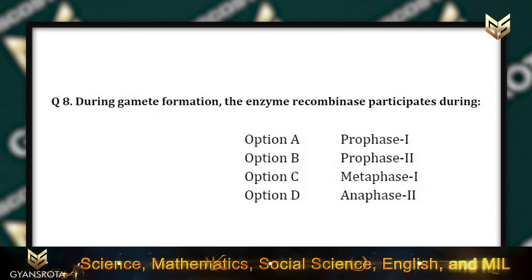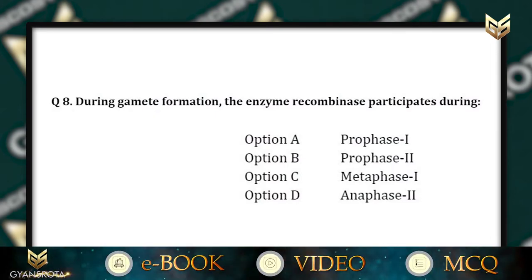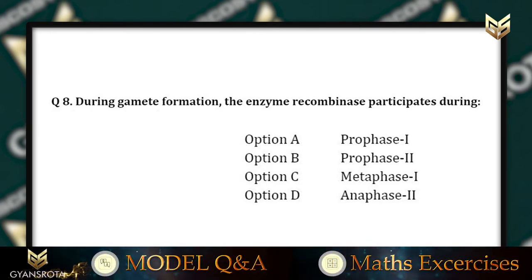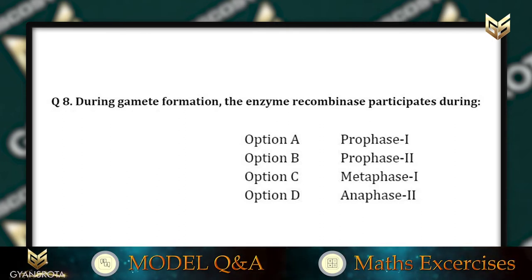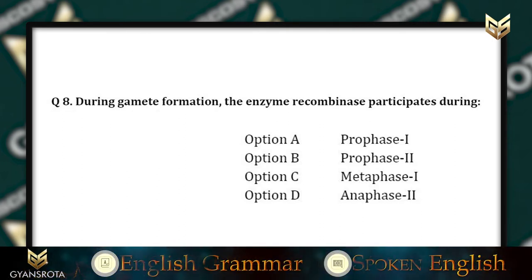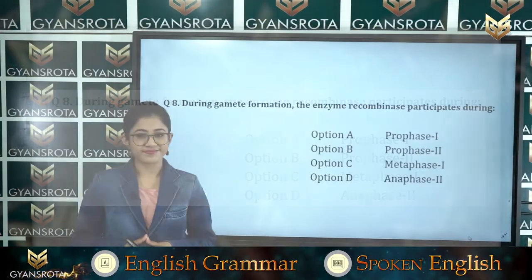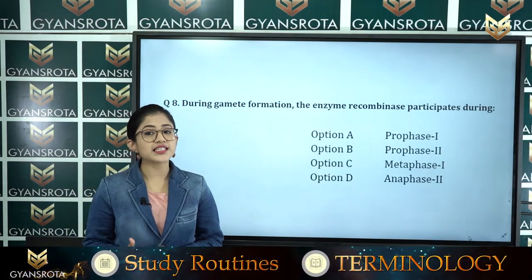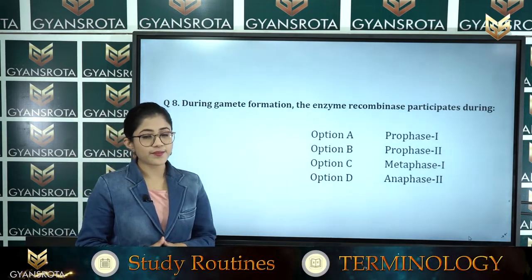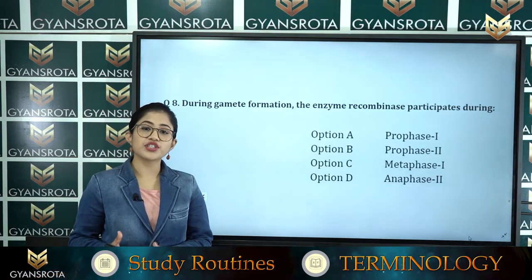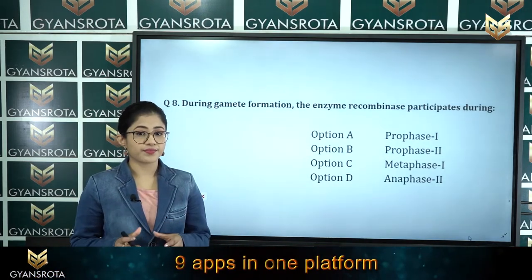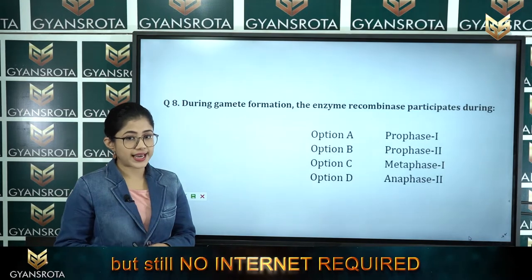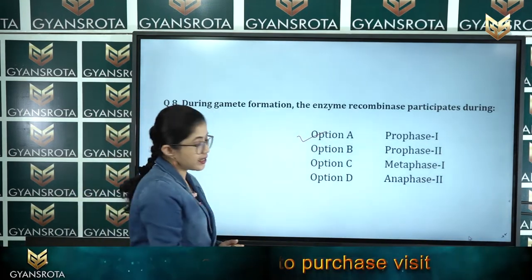Question number 8: During gamete formation, the enzyme recombinase participates during — option A prophase 1, option B prophase 2, option C metaphase 1, option D metaphase 2. This is from the chapter Cell Cycle and Cell Division. The correct answer is option A, prophase 1.